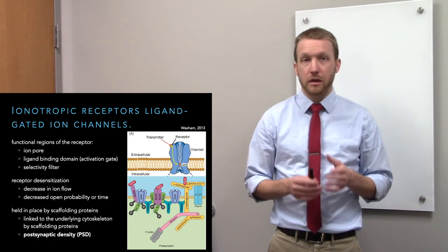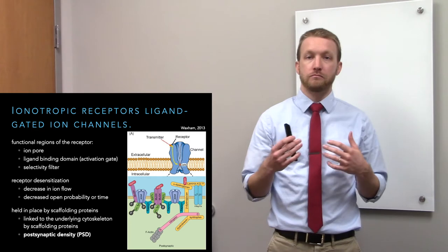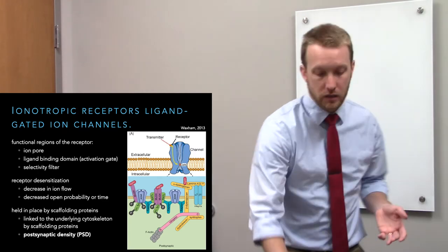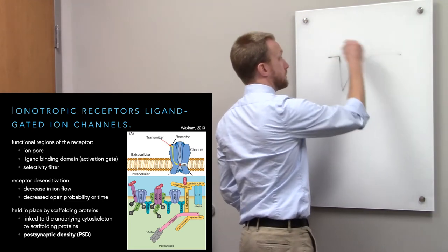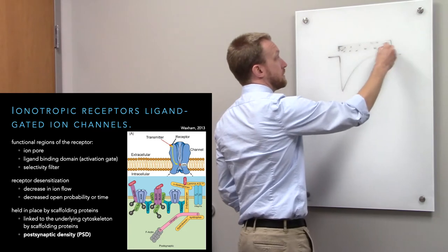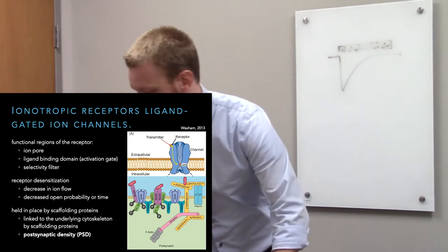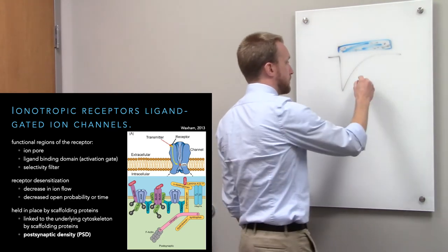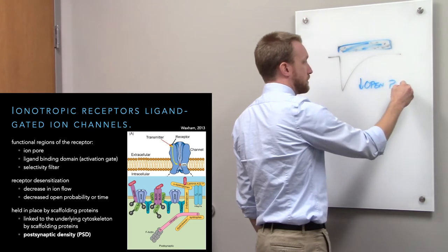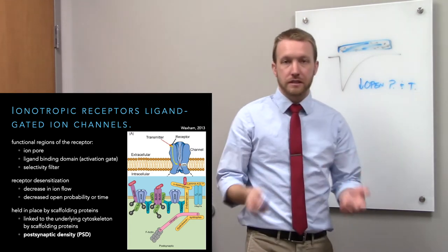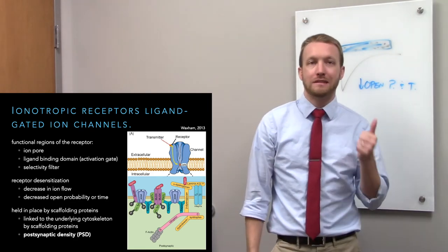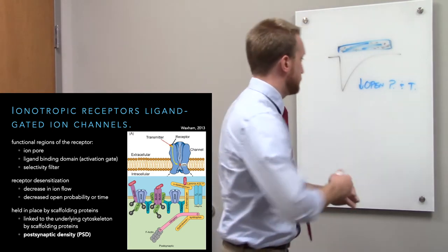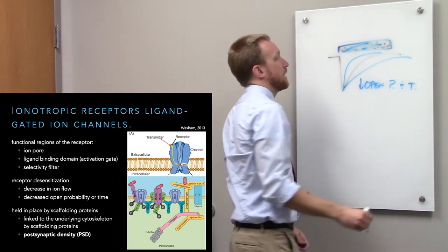All neurotransmitter receptors show some degree of receptor desensitization, with some doing it more rapidly than others. Desensitization appears as a decrease in the amplitude of the current despite the continued presence of the ligand. At the single channel level, this equates to a decrease in open probability and open time — the pore is less likely to open and stays open for shorter durations. The current is maximal at the beginning, then desensitization sets in, at varying rates.